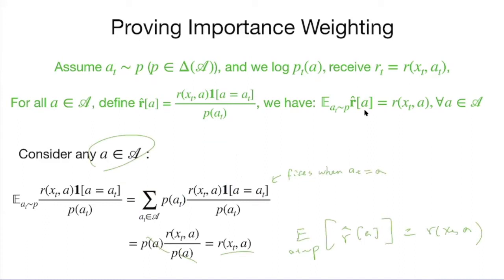By using importance weighting, we get an unbiased estimate of the reward for all actions, including actions we haven't tried. We get rid of one challenge from multi-armed bandit — we do importance weighting and get an unbiased estimate of untried actions, kind of for free.